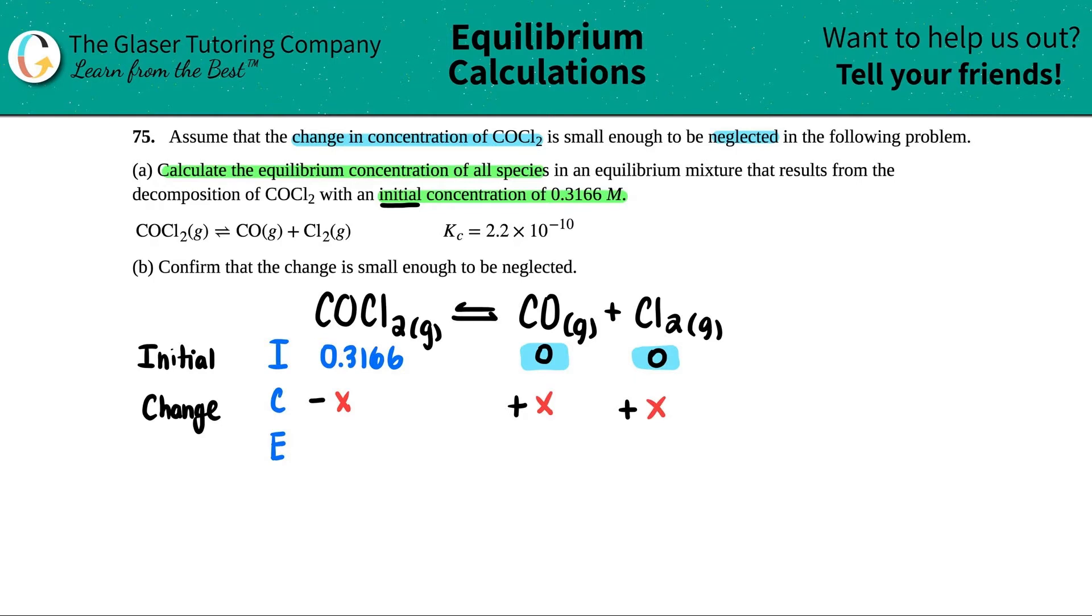Just keep in mind that you have to follow the coefficients when you're working with your X values. But since these were all ones, this would be minus 1X, which is the same thing as minus X plus 1X and then plus 1X. But we don't write the one when we write the Xs. Now, E stands for equilibrium. And all we're doing here is we're just combining the I and the C. So at equilibrium, it's just your initial and the change. So in this case, it would just be 0.3166 and then minus the X value. So coming over here, it would be 0 plus X, which is basically just X. And the same thing here, X. Now we have our equilibrium values in terms of variables and a number. This is the only line that goes into the Kc formula.